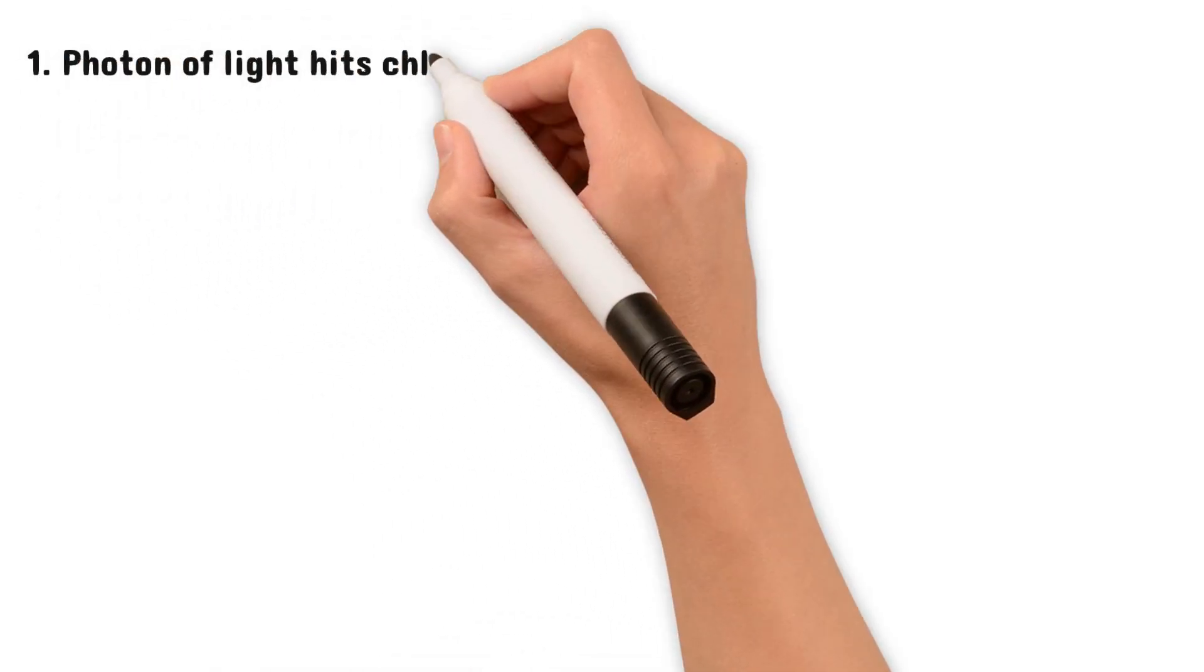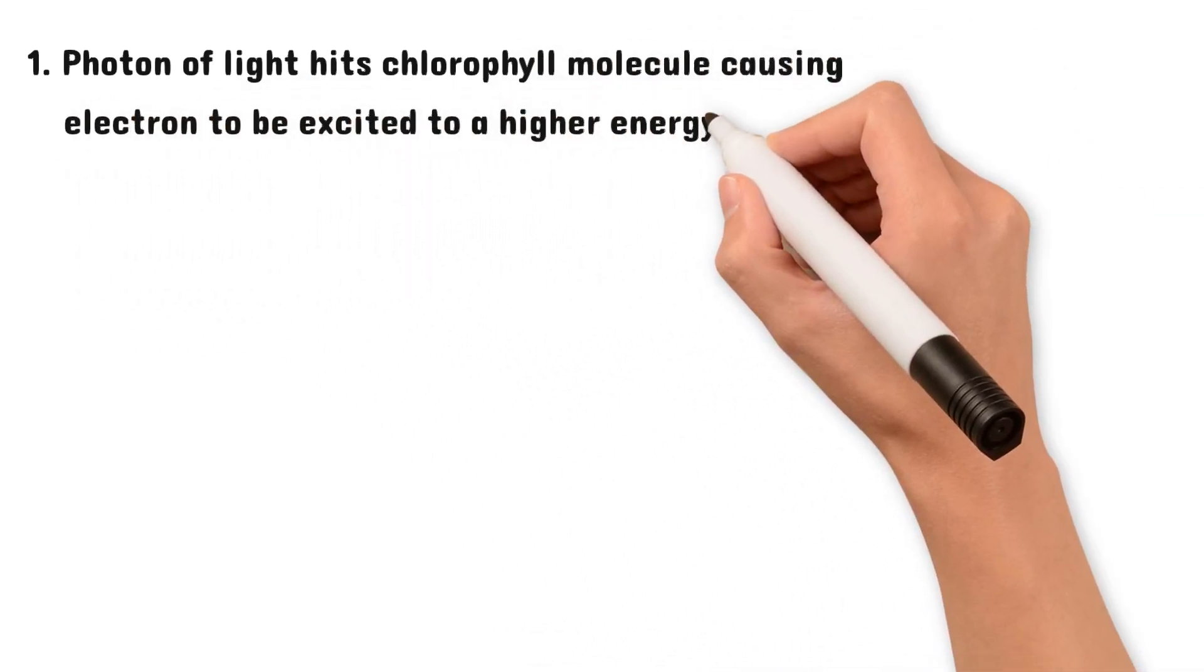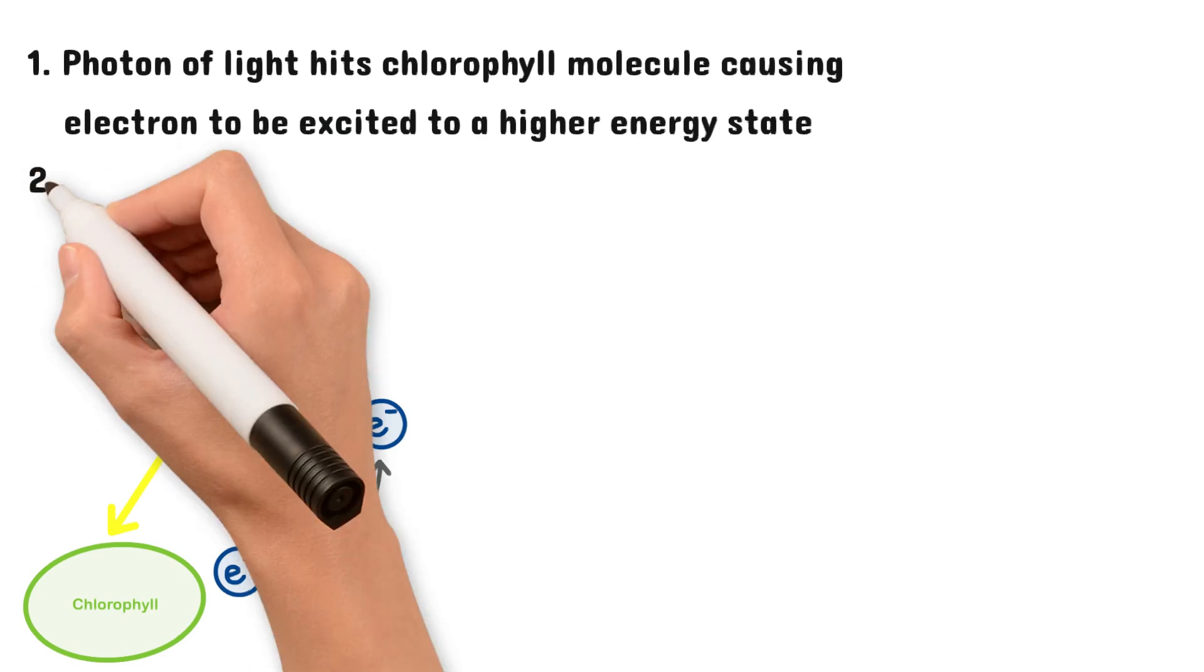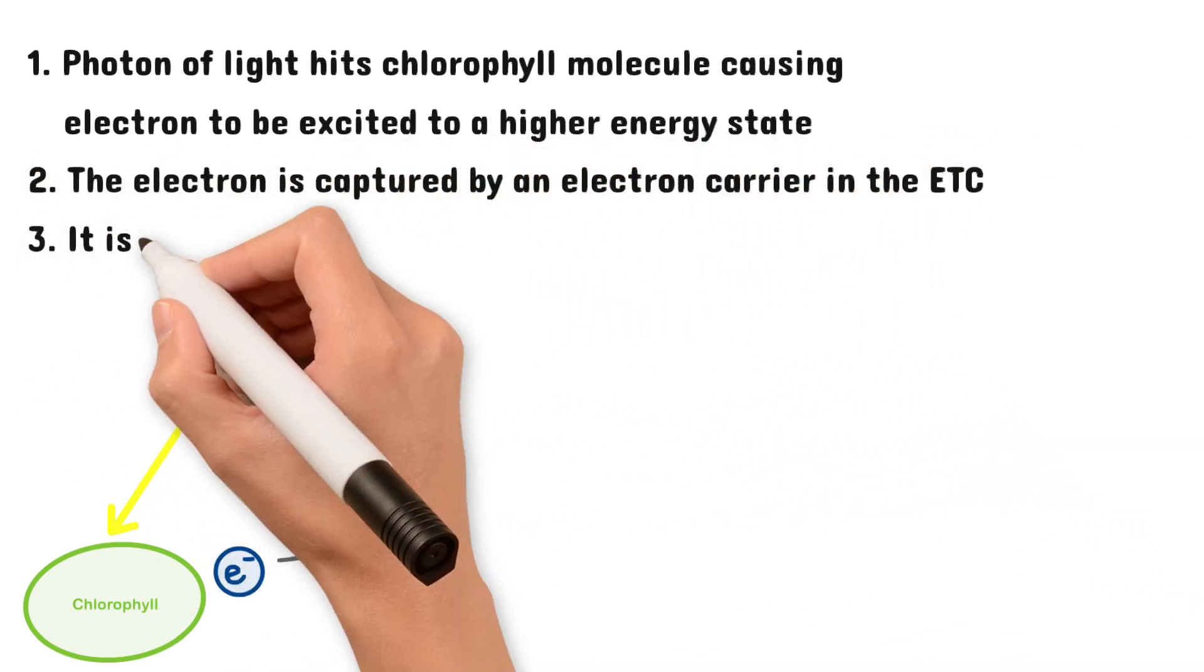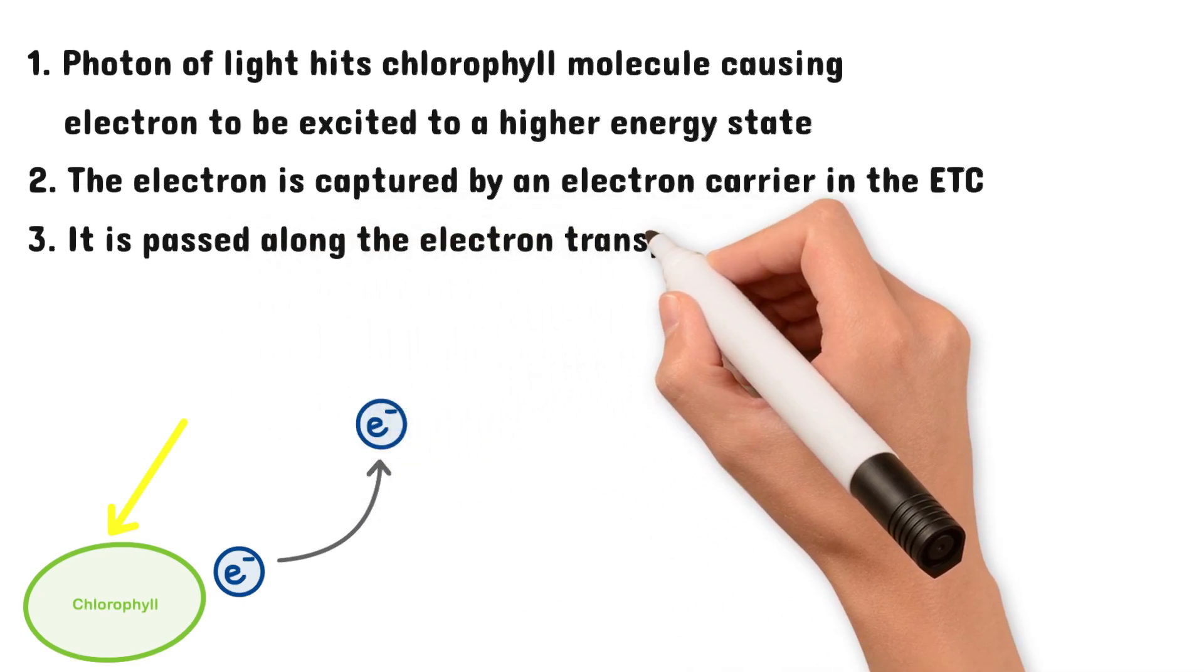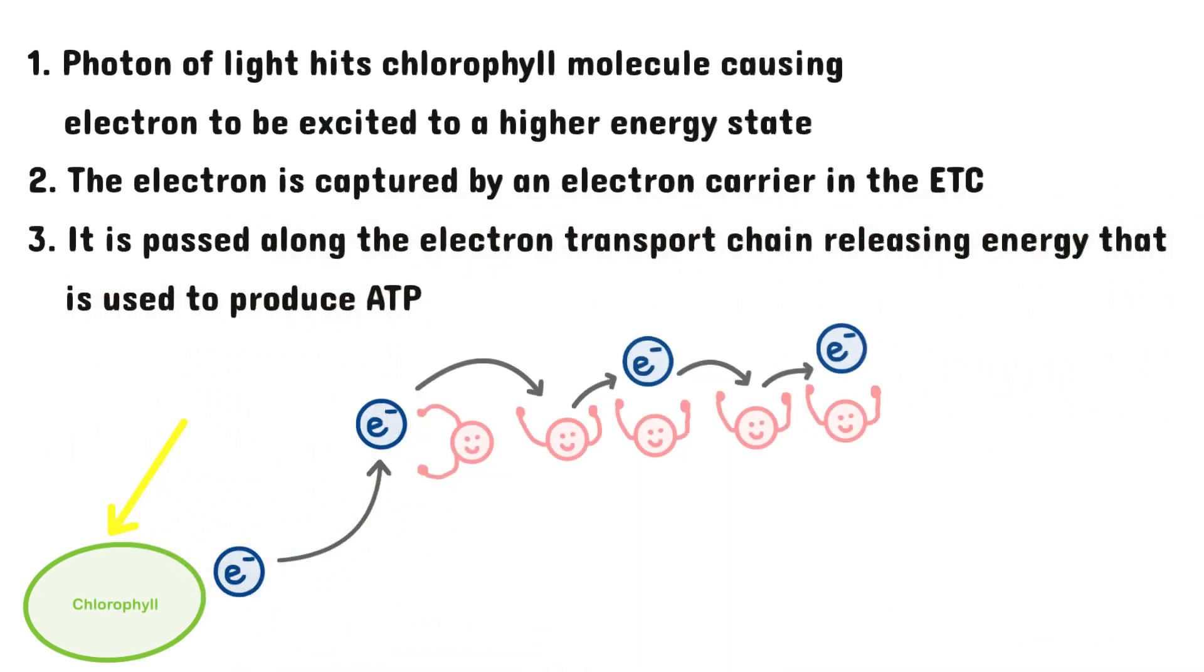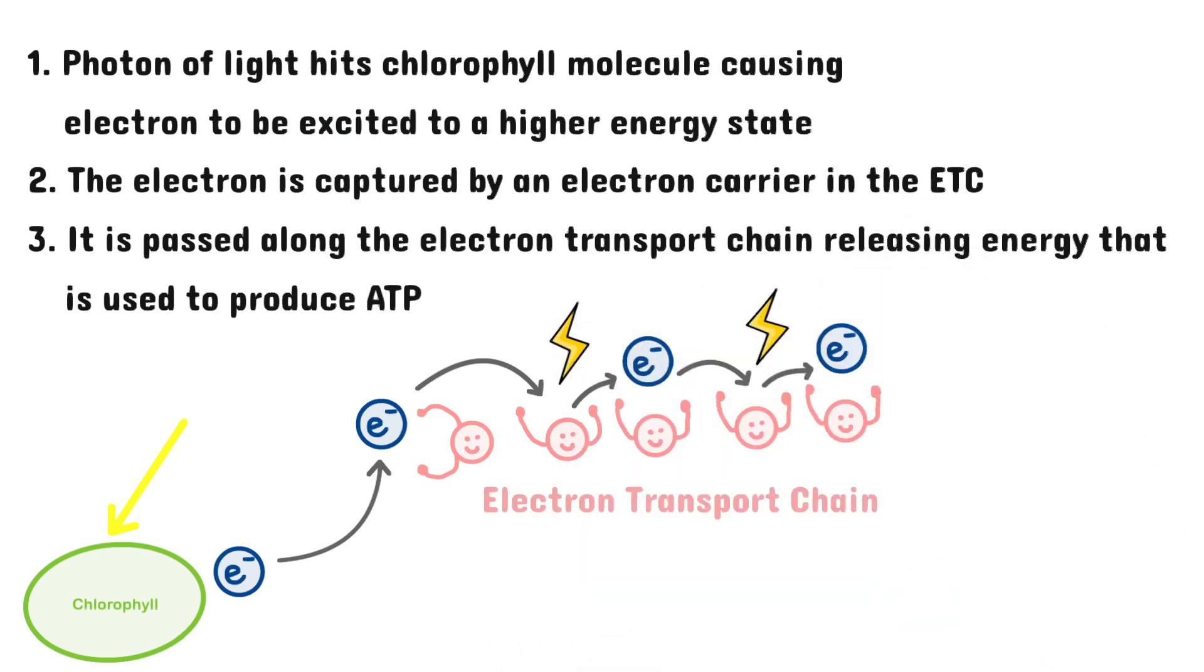The first step is that a photon of light hits the chlorophyll molecule which causes an electron in the chlorophyll molecule to be excited to a higher energy state. The electron is then captured by an electron carrier in the electron transport chain. It is passed along the electron transport chain in a series of redox reactions, releasing energy that is used to produce ATP.